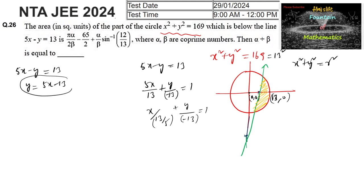Let us substitute this in the circle equation x² + y² = 169. That gives x² + (5x - 13)² = 169.